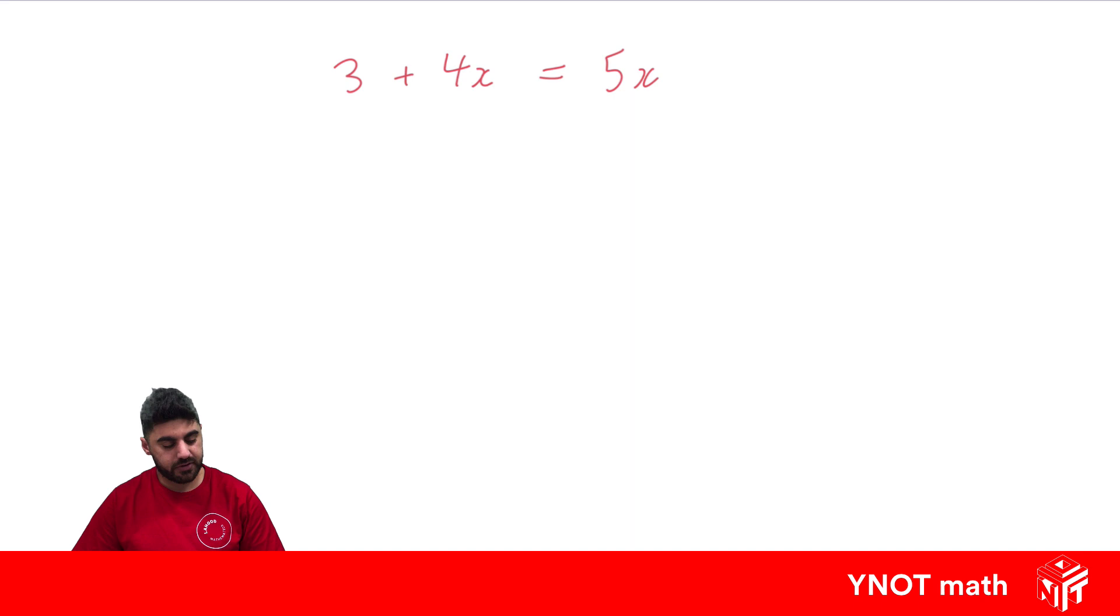So we're going to have to do the opposite of plussing 4x, which is minusing 4x. So we'll do that to both sides, because 4x minus 4x is 0, equals under equals, and we're left with 3 equals 5x minus 4x is 1x, or just x. And we get 3 equals x. Now, in an equation, we can always switch the left and right-hand sides at any time. So I can actually rewrite this as x equals 3.